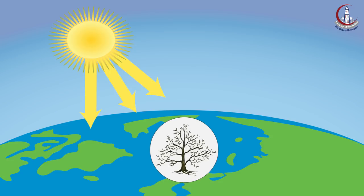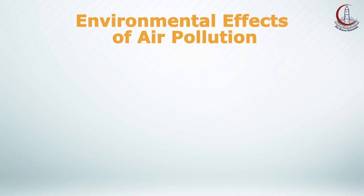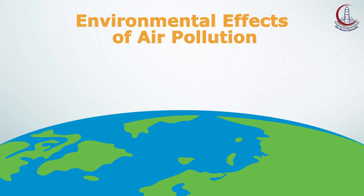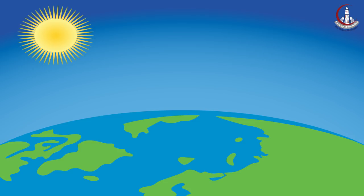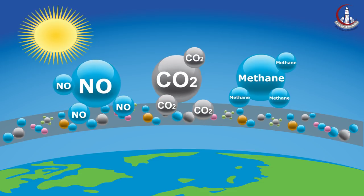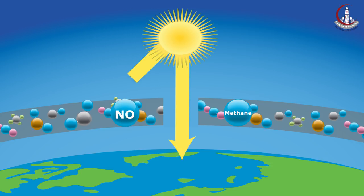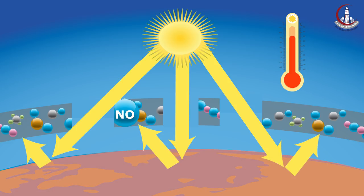Ultraviolet radiation can also damage sensitive crops such as soybeans and reduce crop yields. The last environmental effect of air pollution is global climate change. The earth's atmosphere contains a delicate balance of naturally occurring gases that trap some of the sun's light near the earth's surface — this is known as the greenhouse effect, which keeps the earth's temperature stable. Unfortunately, humans have disturbed this balance by producing large amounts of greenhouse gases, including carbon dioxide and methane, causing the greenhouse effect to trap more heat — a phenomenon known as global warming.